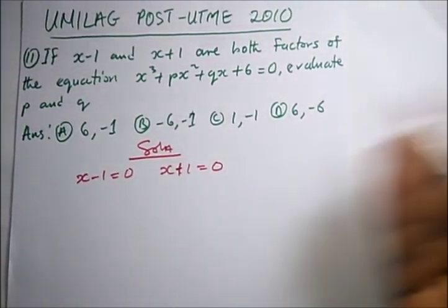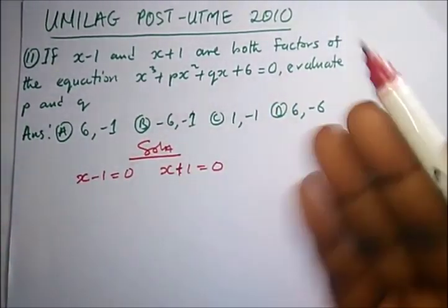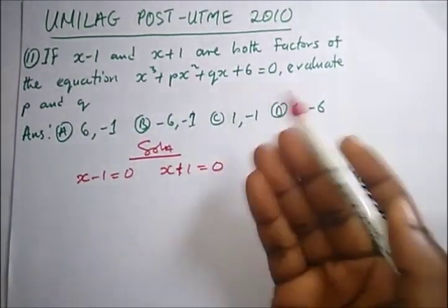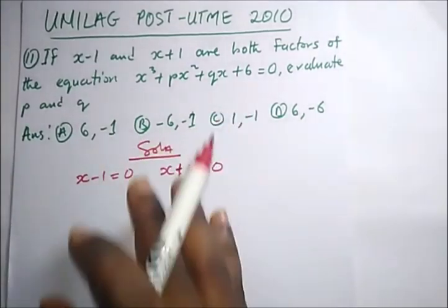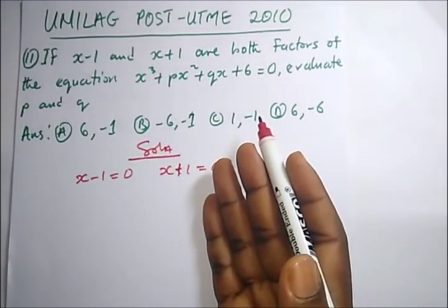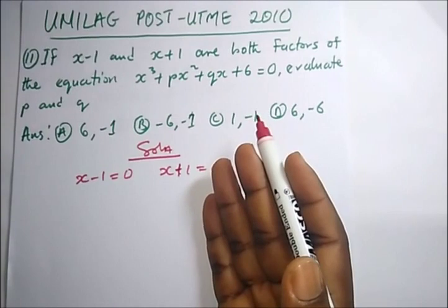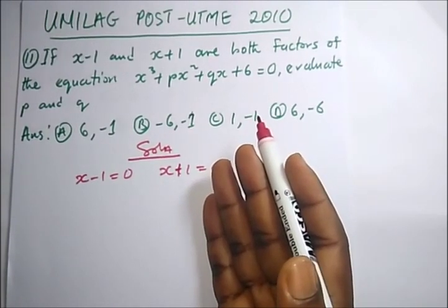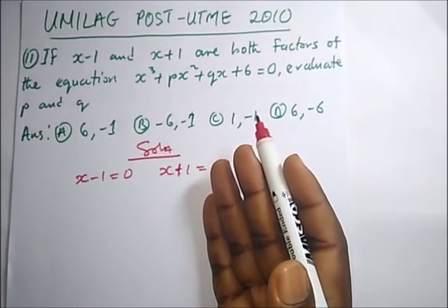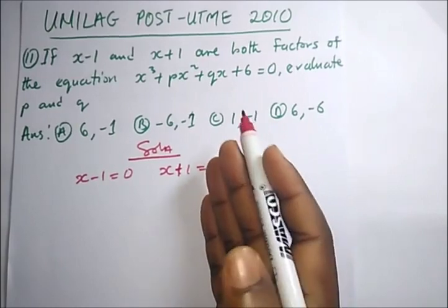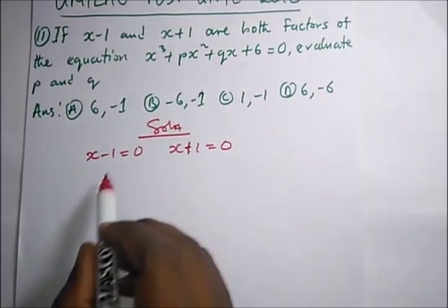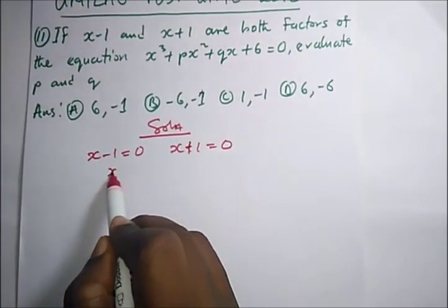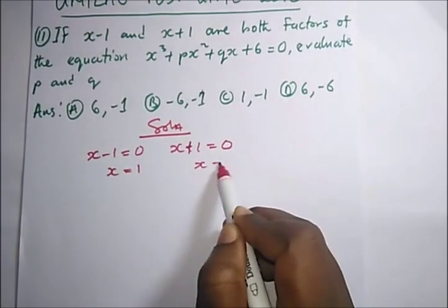I've done about 20 topics on JAMB past questions, so you can watch those videos for revision. Don't forget to subscribe. Back to the question: x equals one and x equals minus one. All we need to do is substitute these values into the given equation.